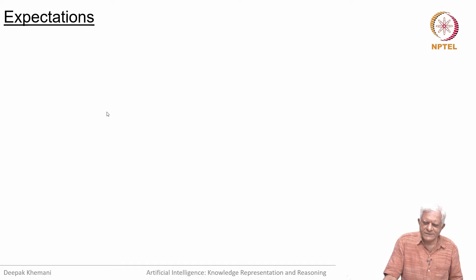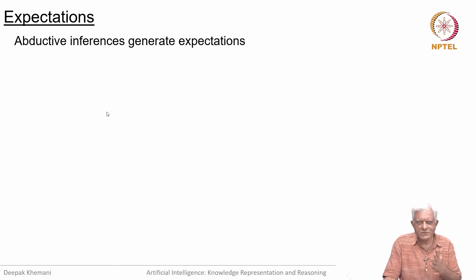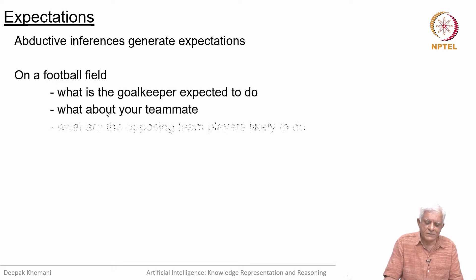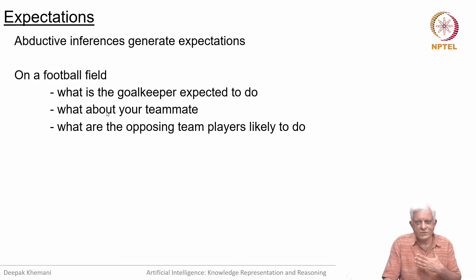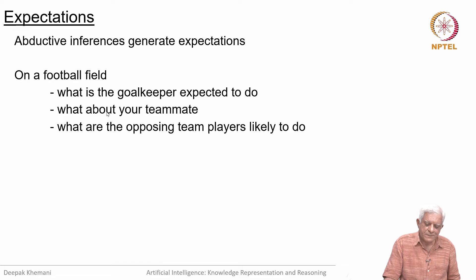Whenever we make inferences, we are talking about expectations. Abductive inferences generate expectations — you expect to see something. If you see dark clouds, you expect that it might rain. On a football field, you make inferences about what the goalkeeper is expected to do, what your teammate will do, and what opposing players are likely to do. You generate expectations and then monitor your own activity and plan, changing course if necessary. All of this happens very dynamically and very quickly — these inferences have to be done rapidly.